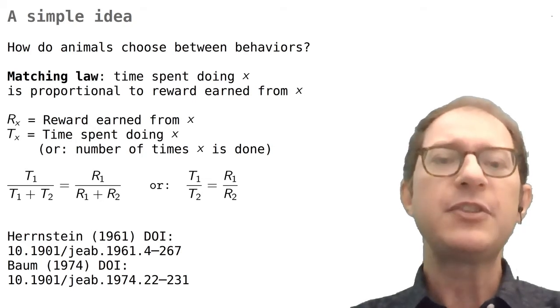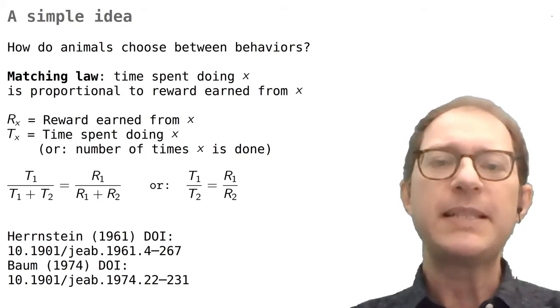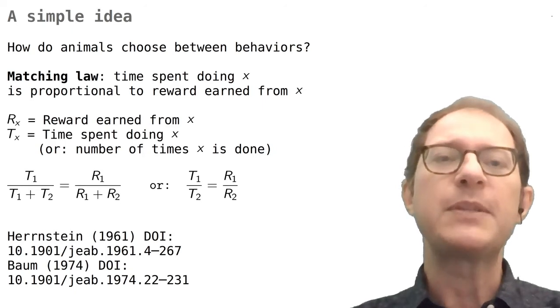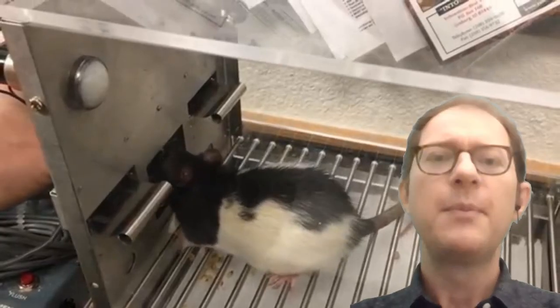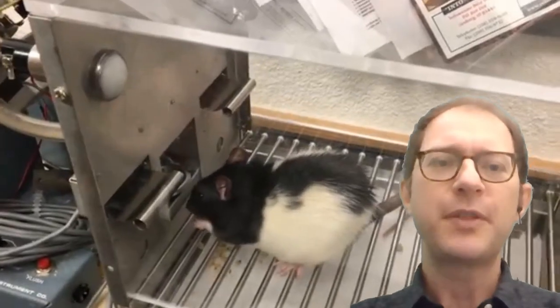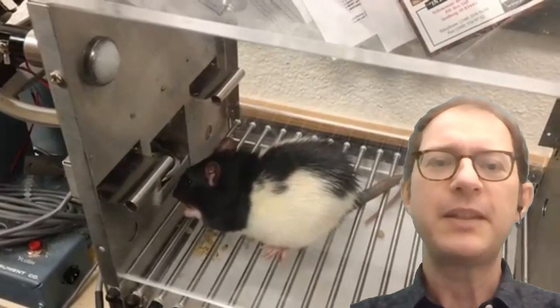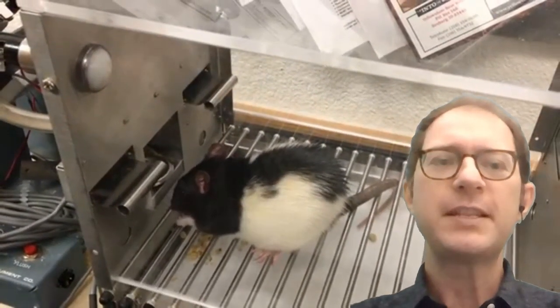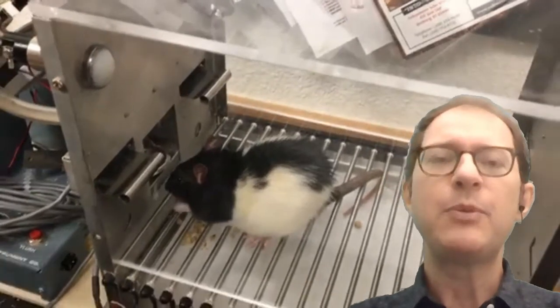Hernstein did not just make this up, but arrived at this idea by studying data from many years of experiments on animal choice. By now it should be no surprise to learn that animal choice is studied typically in the Skinner box. You just need a Skinner box where the animal can do more than one thing.